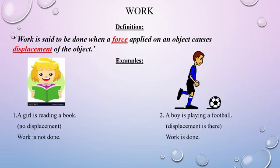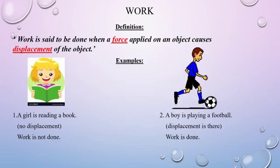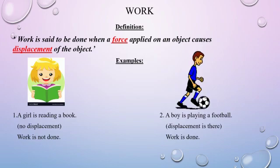Let us see what is work. Work is said to be done when force applied on an object causes displacement of the object. Force and displacement are the key words of the definition. We all know that work is not possible without application of force. Not only force, but displacement is also important for work done. So, if there is no displacement, then there is no work done.